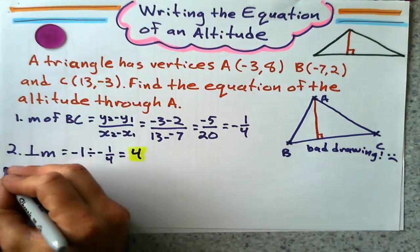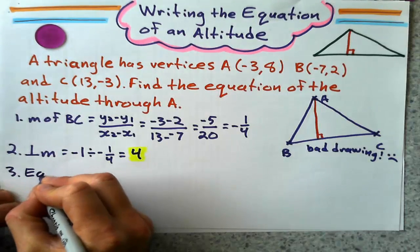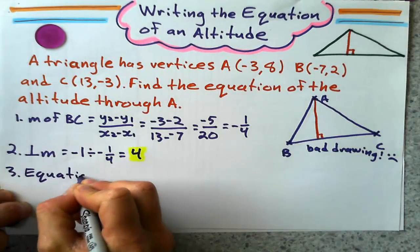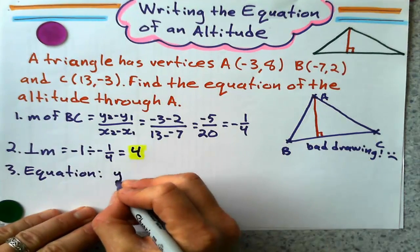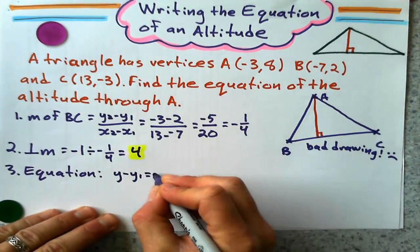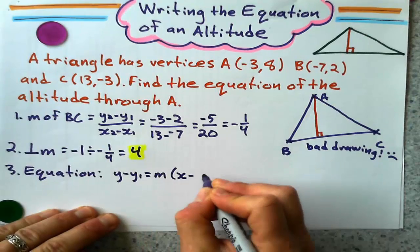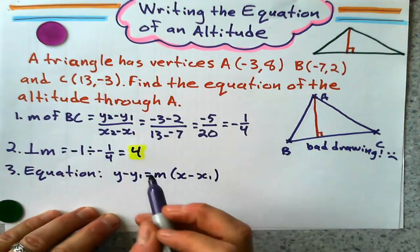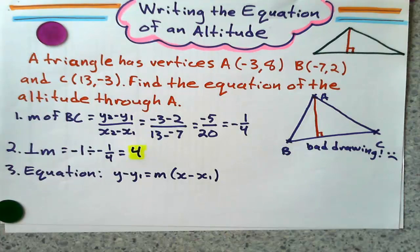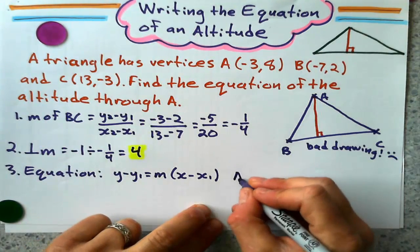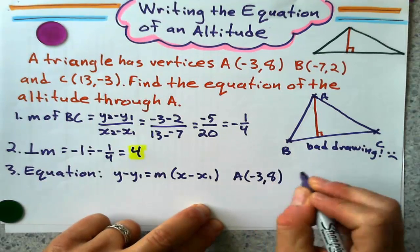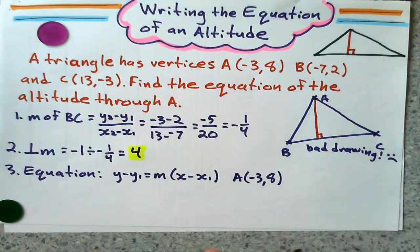So that's the gradient I use when I write my equation. Final step is equation. And I'm going to use the formula Y minus Y1 equals M times X minus X1. And I'm going to use 4 for my gradient. And for my point, I'm going to use A. So don't forget to use negative 3, 8 for your point, because it's saying through A.